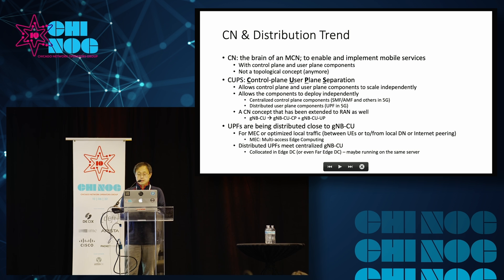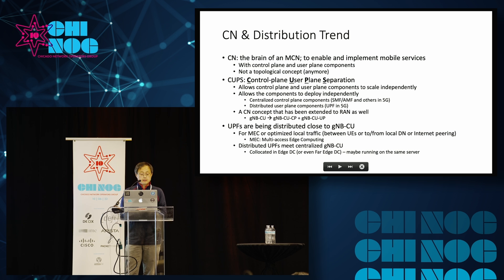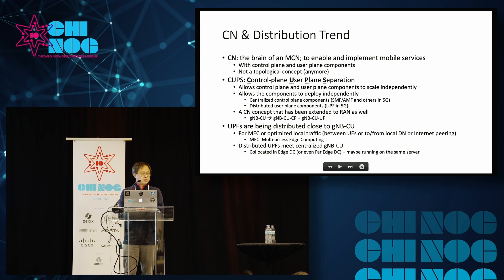For centralized RAN, the gNodeB-CU can actually have the control plane parts and user plane parts separated. For edge computing purposes, where it's essential to have low latency and content close to where users are, UPFs are being distributed close to the gNodeB-CUs. This means distributed UPFs and centralized gNodeB-CUs are actually coming together in the same edge data center — sometimes even running on the same server.